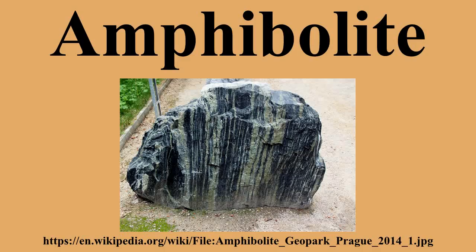Amphibolite is a metamorphic rock that contains amphibole, especially the species hornblende and actinolite, as well as plagioclase. A holocrystalline plutonic igneous rock composed primarily of hornblende amphibole is called a hornblendite, which is usually a crystal cumulate rock. Rocks with greater than 90% amphiboles which have a feldspar groundmass may be a lamproite.